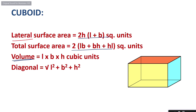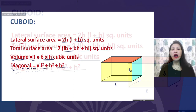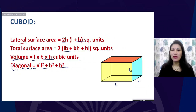The total surface area of a cuboid is 2(lb + bh + hl) square units, where l is the length, b is the breadth, and h is the height. The volume of a cuboid is l × b × h cubic units, and the diagonal of a cuboid is √(l² + b² + h²).